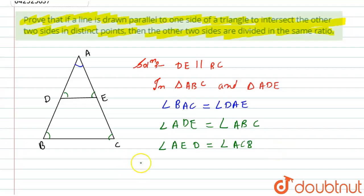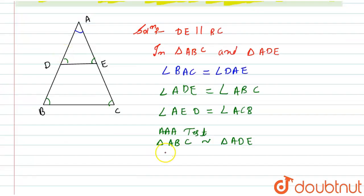So from these three conclusions, I can say that by angle-angle-angle test, triangle ABC is similar to triangle ADE. And as we know that if two triangles are similar to each other, then their sides will be in proportion.